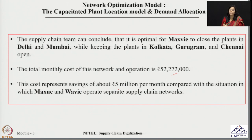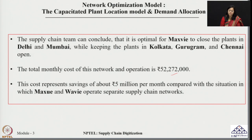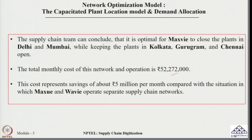In summary, we designed the supply chain network in two ways: first treating the companies individually as a demand allocation problem, then merging them and solving as a capacitated plant location model. The merger resulted in significant cost savings, and the solution was obtained using Excel's Solver optimization tool. With this, we close today's session and will meet again next week.